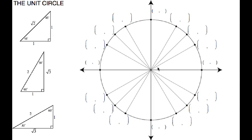Hi guys, here is your lesson on the unit circle. The unit circle is a circle that has a radius of one unit, which is why it's called a unit circle. What we can use the unit circle for is to find exact values of trig functions. If you recall from geometry, we have special right triangles: 45-45-90 and 30-60-90. These special triangles allow us to create our ordered pairs around the unit circle.